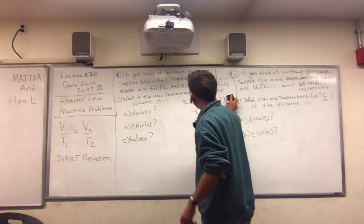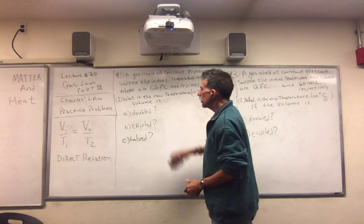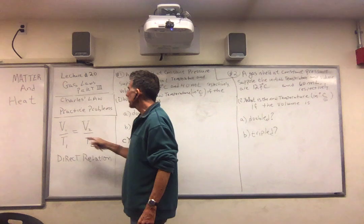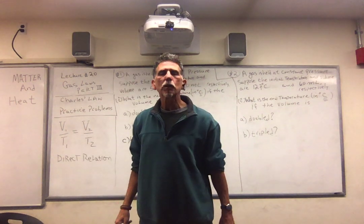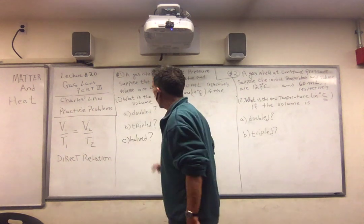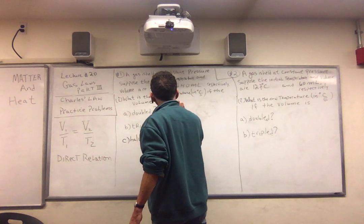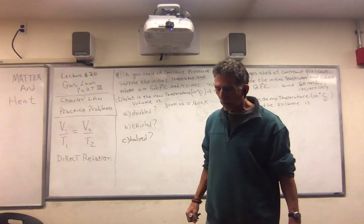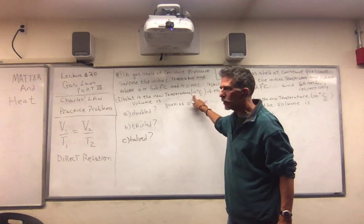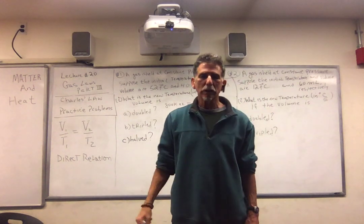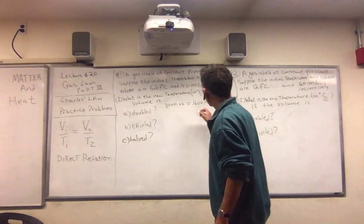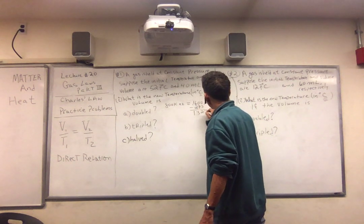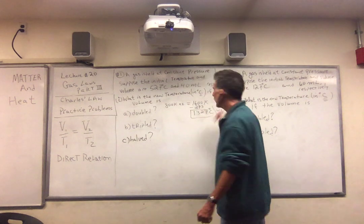The temperature is 800 Kelvin. Now we can use this relationship. If the volume is doubled, the Kelvin temperature doubles. So the new temperature in Kelvin is 800 Kelvin multiplied by 2, which gives us 1,600 Kelvin. But that's not the final answer, because I want the answer in Celsius. How do you go from Kelvin back to Celsius? You just subtract 273. So we subtract 273 and we get 1,327 degrees Celsius. That's the answer.